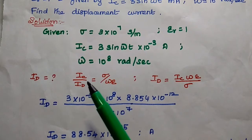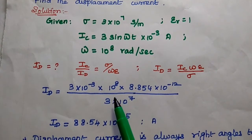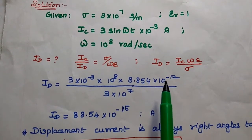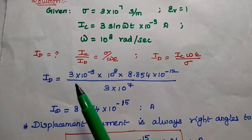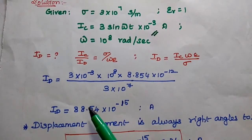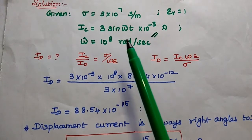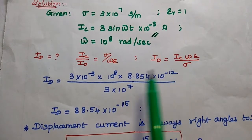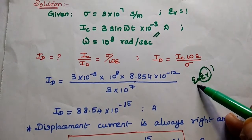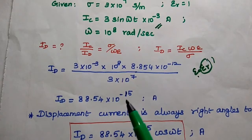As already discussed, the relation between conduction current and displacement current is sigma divided by omega epsilon. From this, the displacement current Id = Ic × omega × epsilon divided by sigma. Substituting: Ic = 3 × 10⁻³, omega = 10⁸, epsilon = epsilon_naught × epsilon_R = 8.854 × 10⁻¹² × 1, and sigma = 3 × 10⁷.